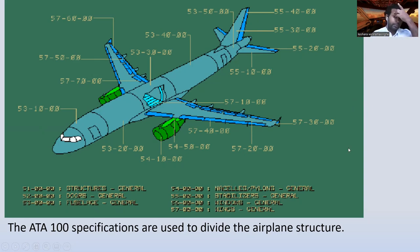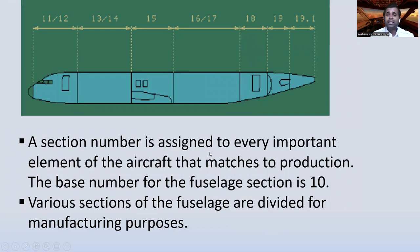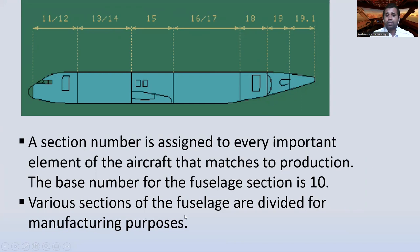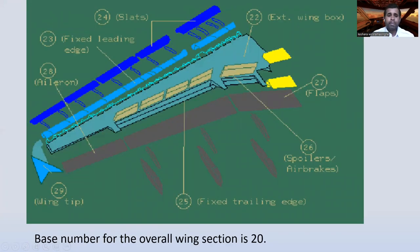The section number is assigned to every important element of the aircraft that matches production. The base number for the fuselage section is 10 — it starts from 10: 11, 12, 13, 14, 15, 16, 17, 18, 19, 19.1, and so on. The various sections of the fuselage are divided for manufacturing purposes. The base number for the overall wing section is 20 — remember, fuselage is 10 and wing section is 20.